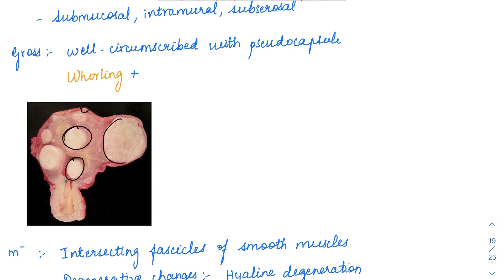Grossly, these are well circumscribed and have a pseudocapsule. The pseudocapsule is compressed host tissue. As they grow slowly, these benign tumors compress the host tissue, forming a pseudocapsule.